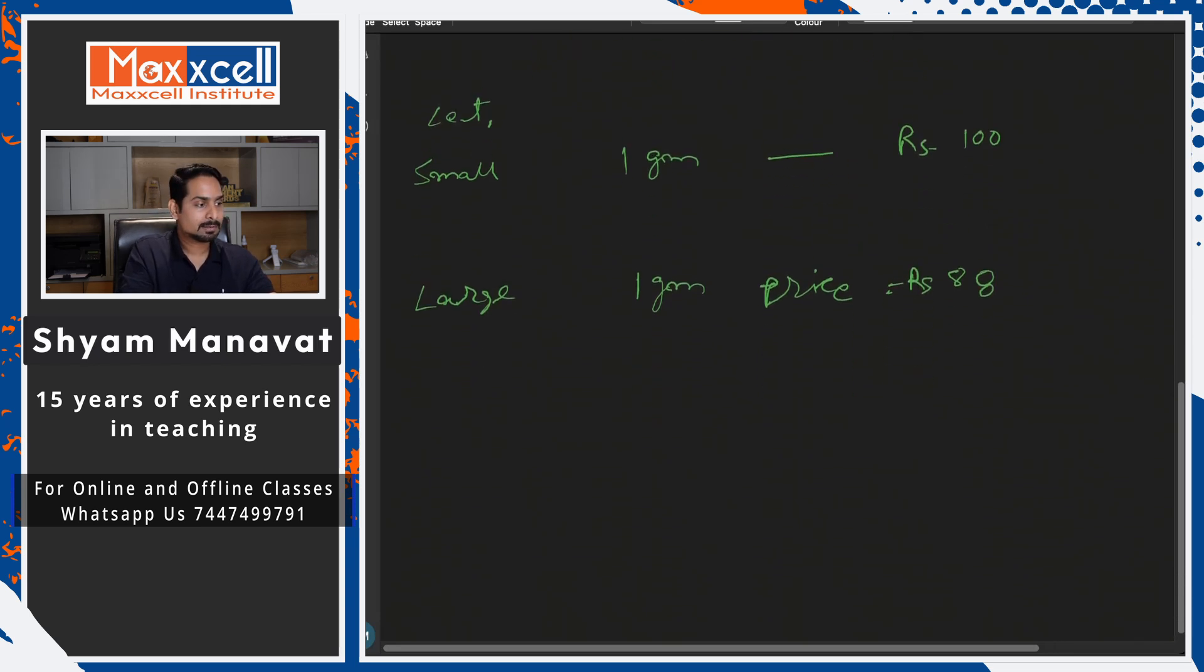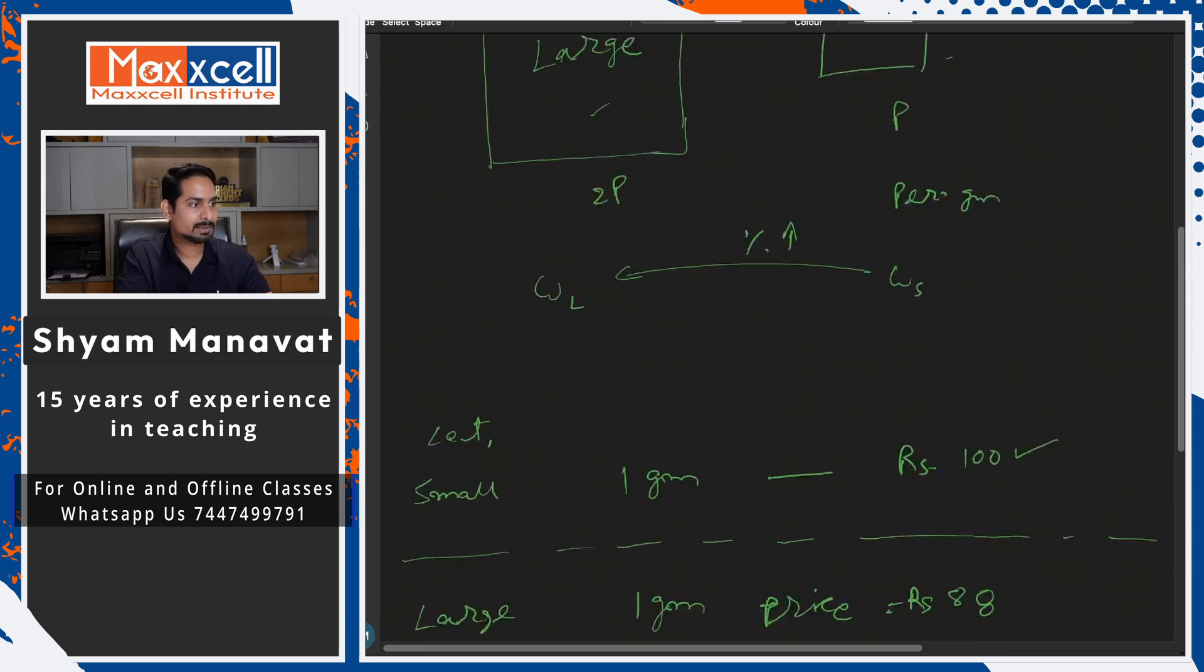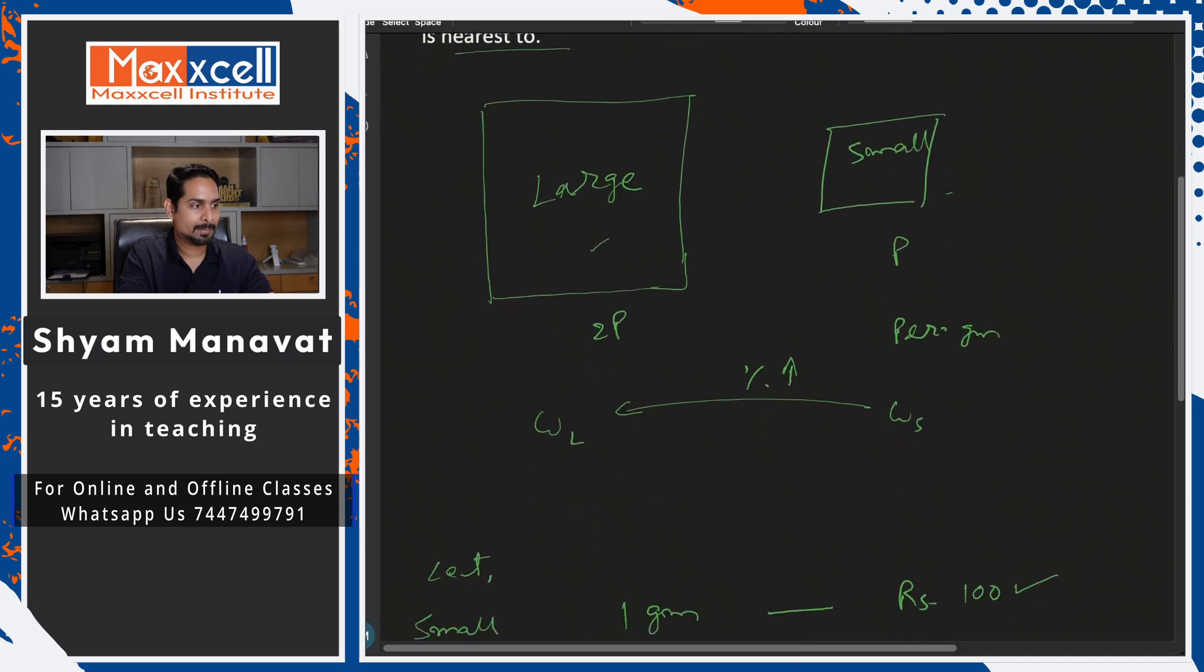But, question said the price of the large box is actually double the smaller one. When you get to sell this, when you go to sell this, the large box price is actually double. Where is it written? Here. The large box sold twice the price of the smaller one.